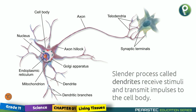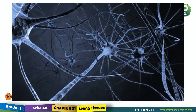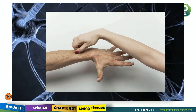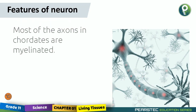Slender processes called dendrites receive stimuli and transmit impulses to the cell body. Some signals will come from outside, and the dendrites receive those signals. This is how transmissions are working inside your body. If somebody is pinching, the signals go from the dendritic branch through the dendrite to the cell body, where the process happens. Features of the neuron continue.